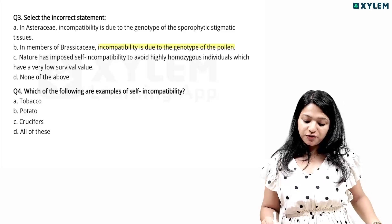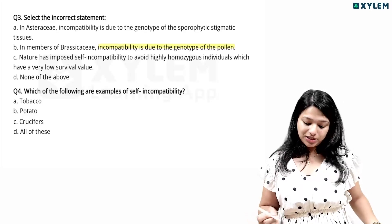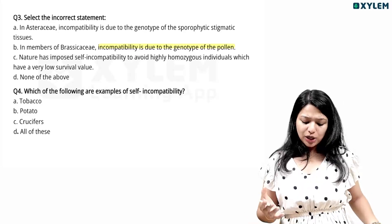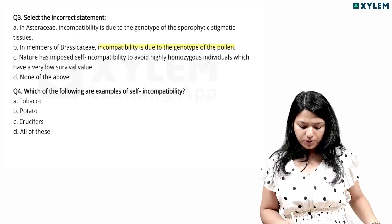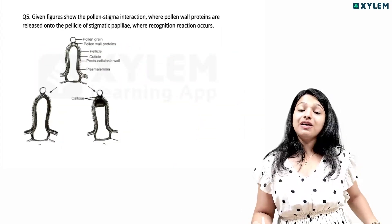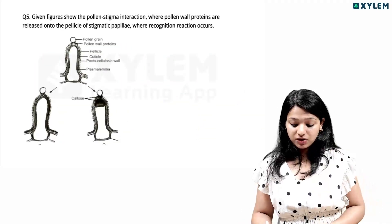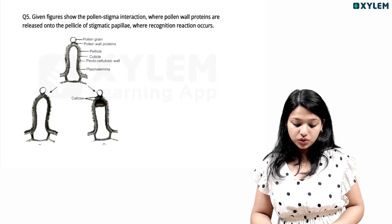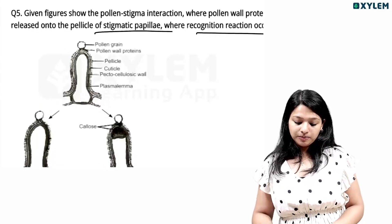Which of the pollen are examples of self-incompatibility? Tobacco, potato, crucifers — all of these. Given figures show the pollen-stigma interaction where pollen-walled proteins are released into the pellicle or stigmatic papillae where recognition reactions occur.